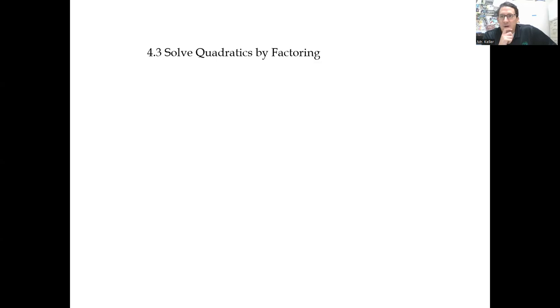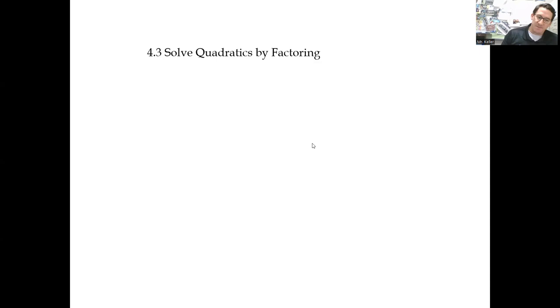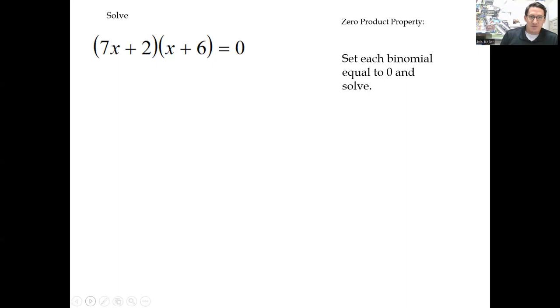We're continuing on with our unit of solving quadratics. This one we're going to be doing probably the quickest, and I think the easiest if we're good at factoring — solved by factoring. We're going to factor the quadratic and then solve it from there. Before we get into the factoring part, let's talk about what's called the zero product property. We're going to be using this a lot to solve quadratics.